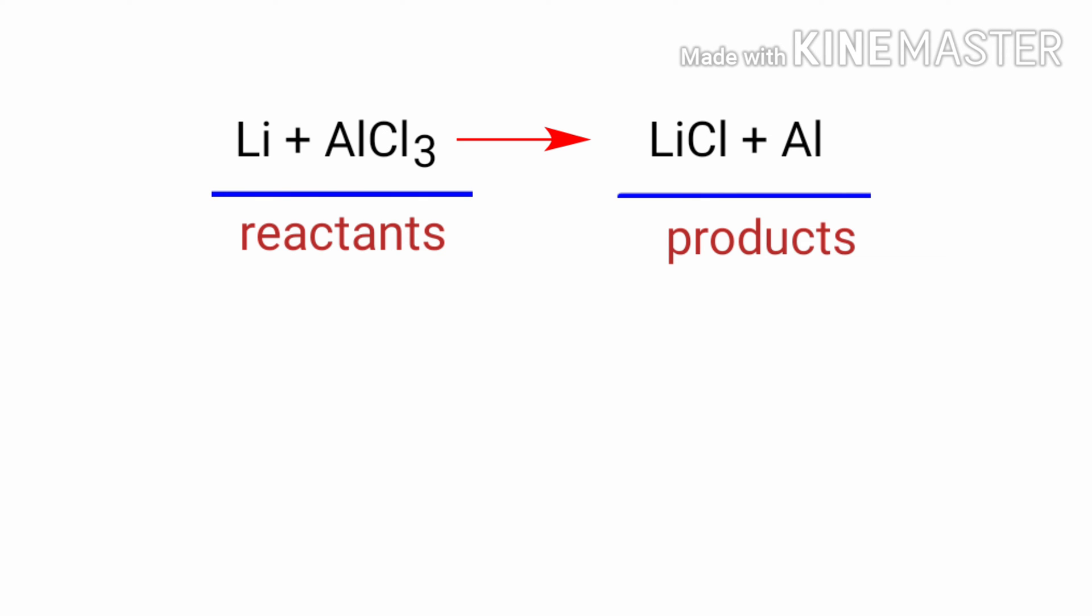In this equation, the reactants are lithium and aluminum chloride, and the products are lithium chloride and aluminum. If you look at this equation, the equation is not balanced.